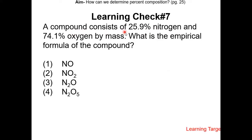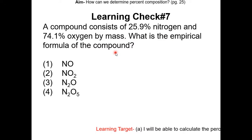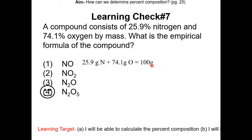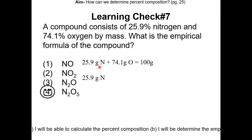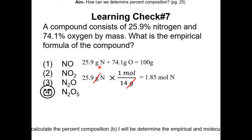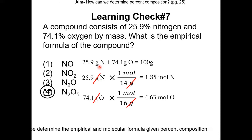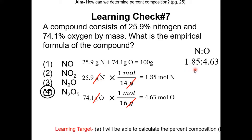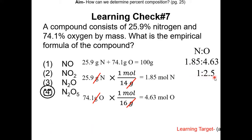Learning check number 7: a compound consists of 25.9% nitrogen and 74.1% oxygen by mass. What is the empirical formula? Pause the video and resume once completed. The answer is choice 4, N2O5. Convert percent composition to mass — they add up to 100 grams. Then convert to moles: 25.9 grams of nitrogen divided by 14 gives 1.85 moles of nitrogen. 74.1 grams of oxygen divided by 16 gives 4.63 moles of oxygen. The ratio is 1.85 to 4.63. Dividing by the smallest number, 1.85, gives 1 to 2.5. Doubling gives 2 to 5, so the empirical formula is N2O5.